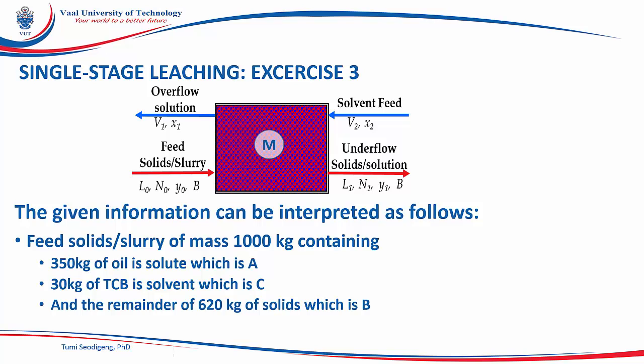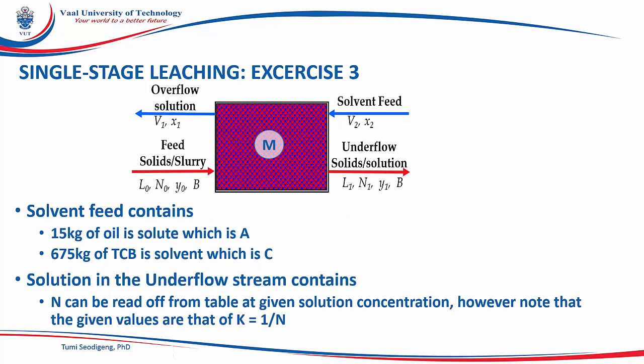We can interpret the given information as follows. The feed slurry totals a thousand kilograms, containing 350 kilograms of oil (solute A), contaminated with 30 kilograms of solvent TCB (component C), and the remainder is solid B calculated to be 620 kilograms. The solvent feed contains 15 kilograms of oil (solute A) and 675 kilograms of TCB (component C).